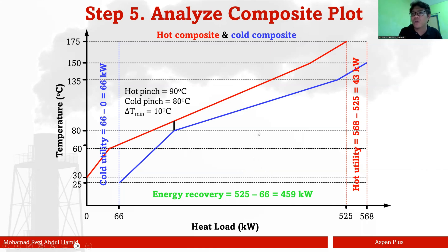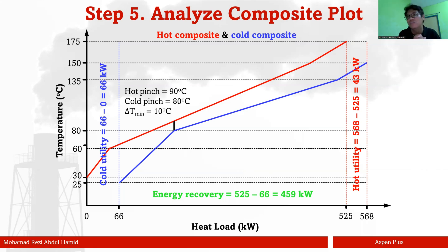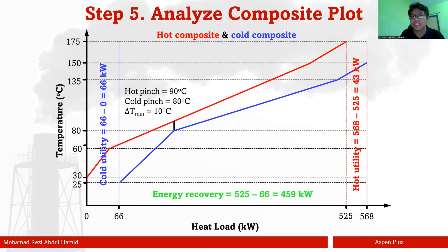The energy recovery is found in the region where both hot and cold streams overlap. The endpoints are 525 and 66, so energy recovery = 525 − 66 = 459 kW. In summary, from the hot and cold composite curve you obtain: hot and cold pinch temperatures, energy recovery, and hot and cold utility requirements — all plotted on the TH diagram.